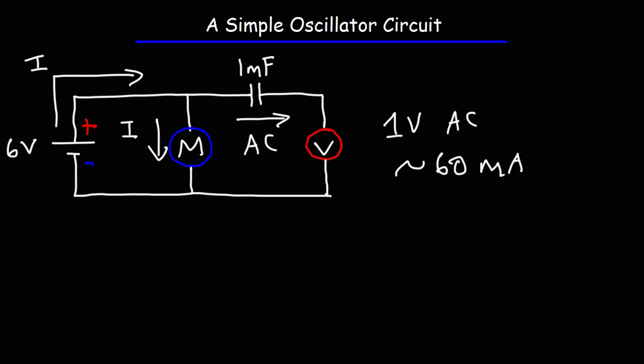So, as you saw in that demonstration, this was definitely not a stable circuit. The frequency varied widely from 1 to 2 kilohertz.